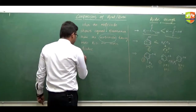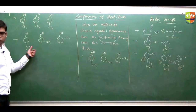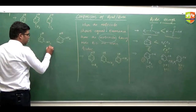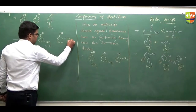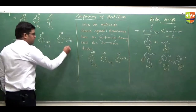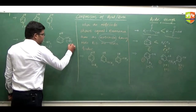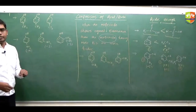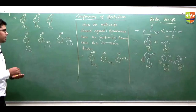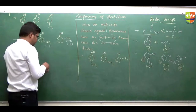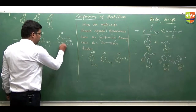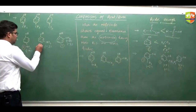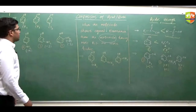Another example: this one shows minus M effect, this one shows minus I, and this one shows minus M. Apart from minus M, minus I is also possible here. All these effects increase acidity. So the order of acidity will be: first this one, second this one, and third this one.